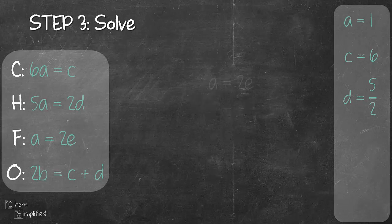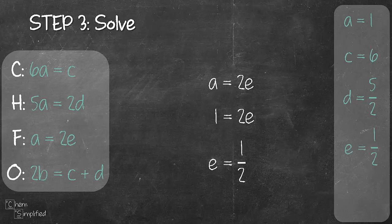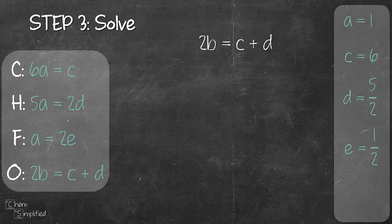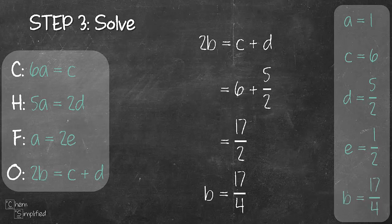Next we'll solve the third equation. Subbing in A equals 1, that will give us E equals 1 over 2. We're almost done. Only one final equation left, and then we can find a value for B. So using the values for C and D that we have found, B turns out to be 17 over 4.